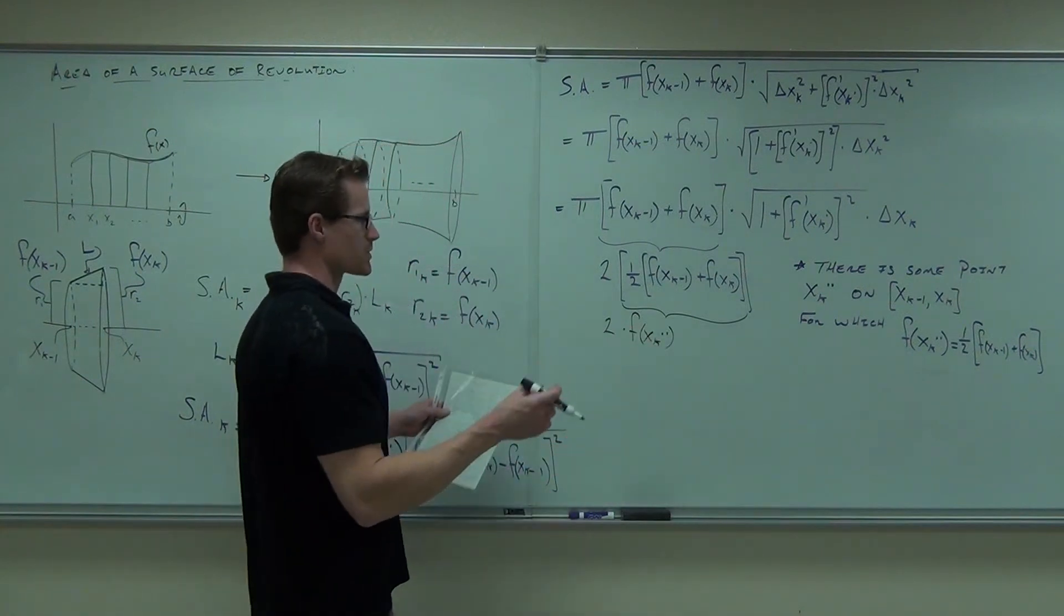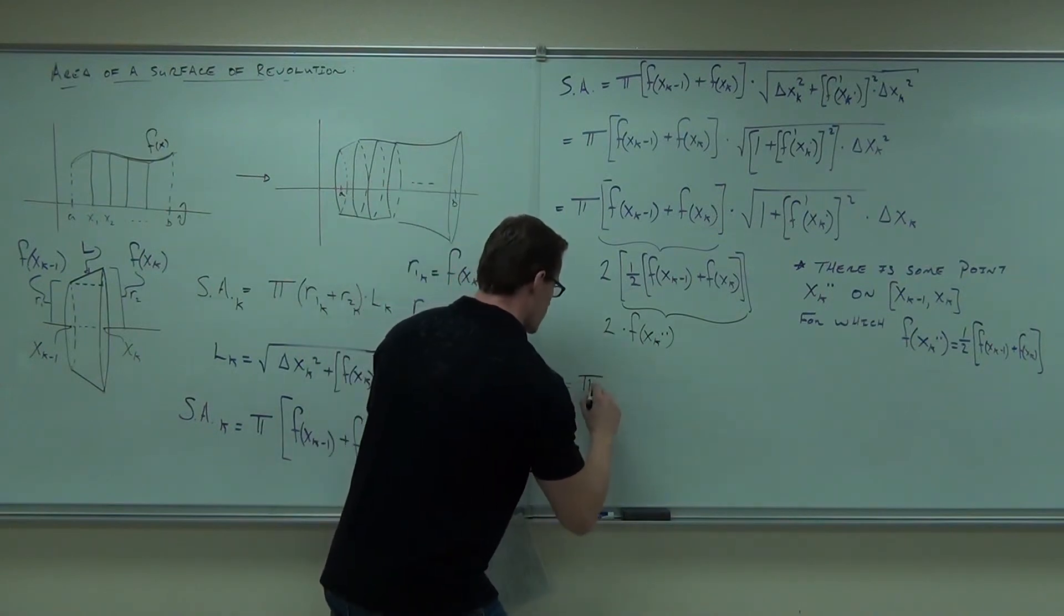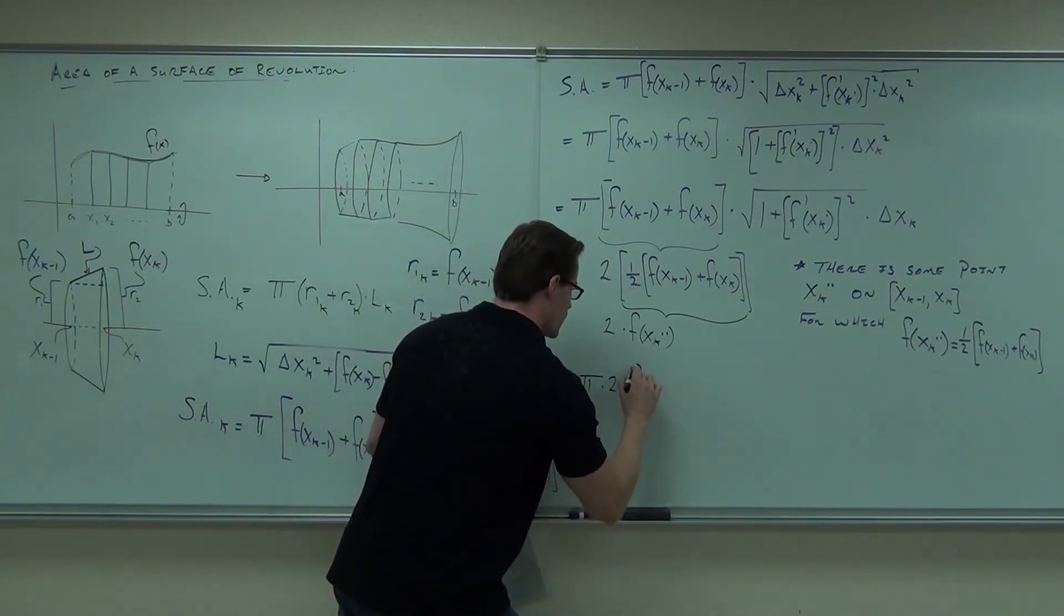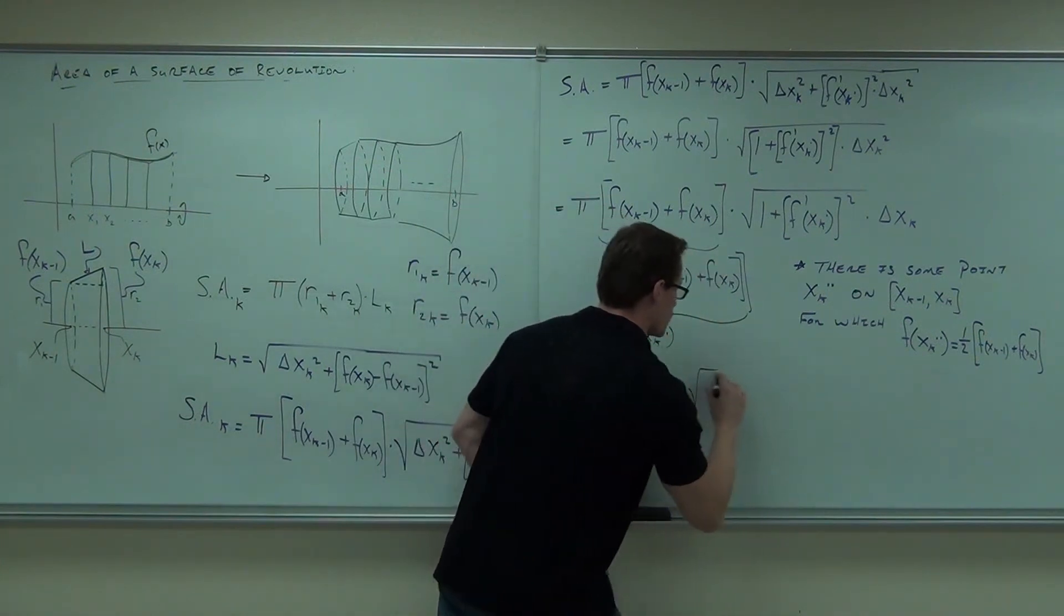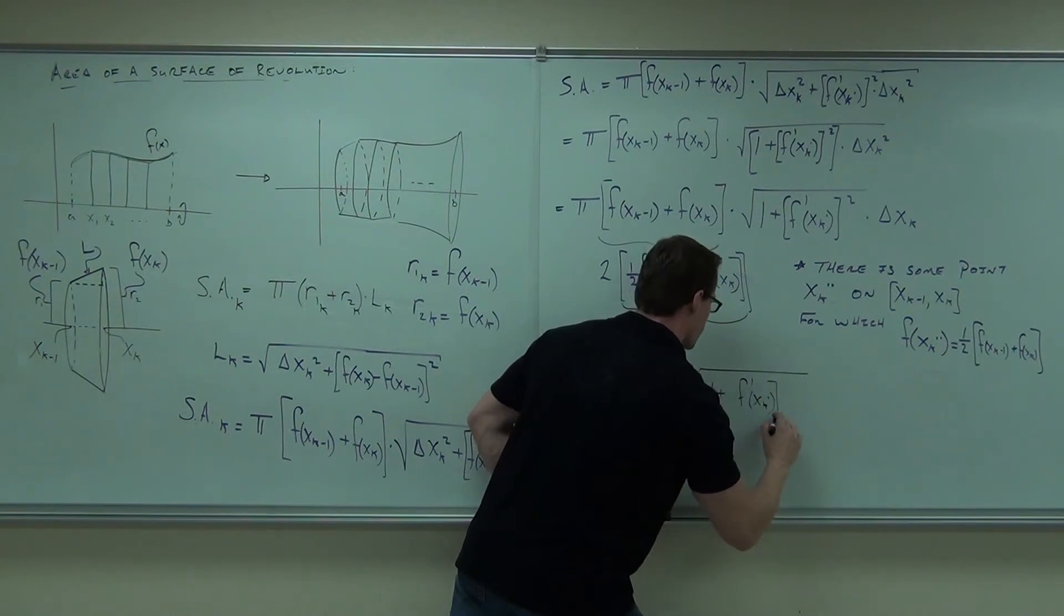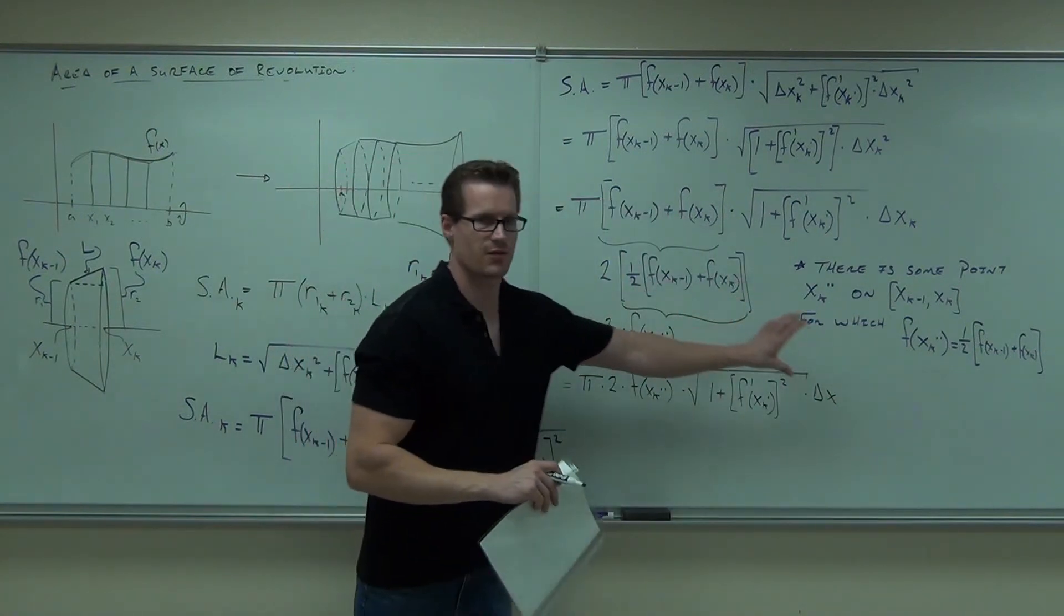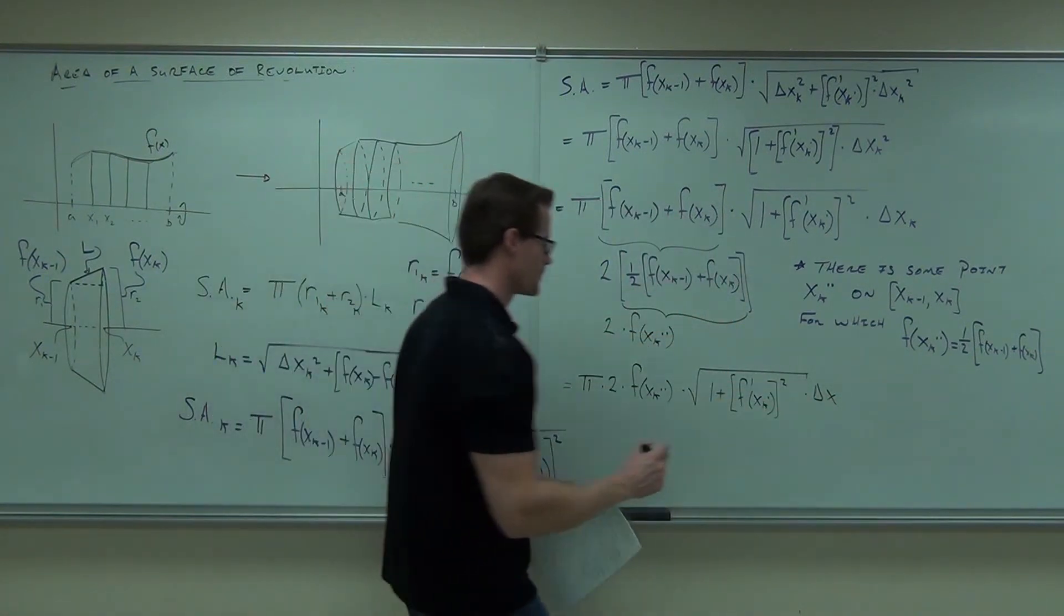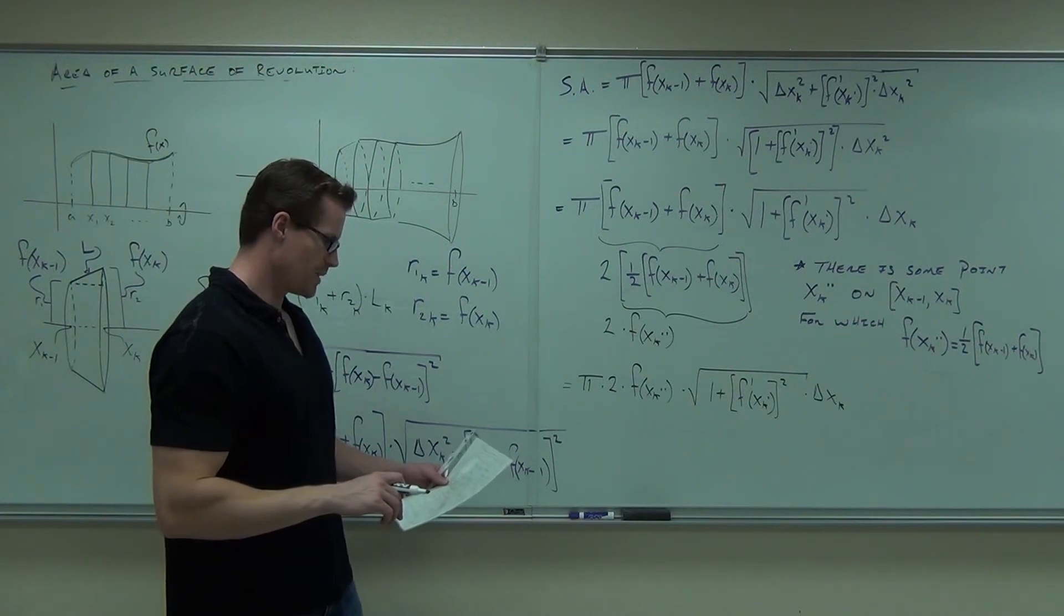So let's see. We're almost done. We have now a 2, a pi, a 2, f of xk dot dot. That's all this. Times, we already had the length. Times delta x, delta x is now outside of our square root, remember to the square root of the delta xk dot, times delta xk square. So pretty close to done. We'll make this a little bit prettier here.